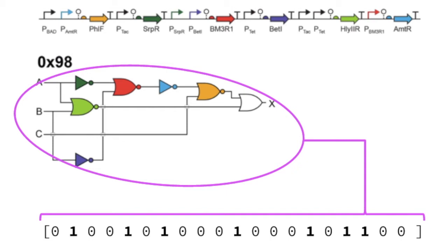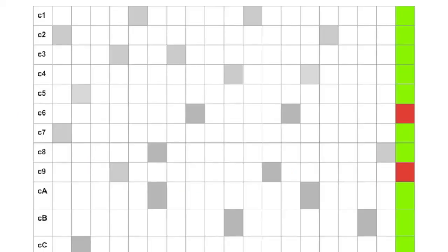For instance, this circuit is using seven basic components, and that's why its feature vector has seven ones. We automatically generated feature vectors based on the Cello designs used in the paper.